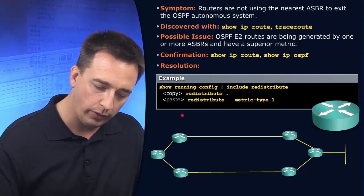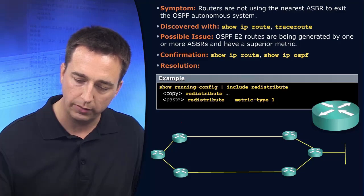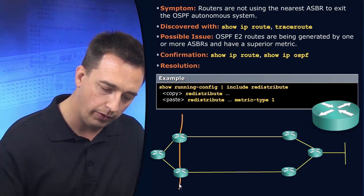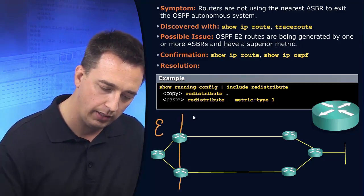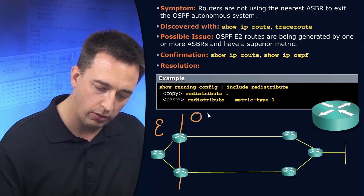Let's say we're performing redistribution at this point in our network. So let me draw a line right here. So on this side we're using EIGRP and on this side we're using OSPF.